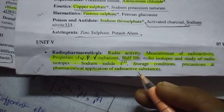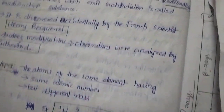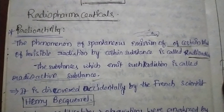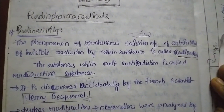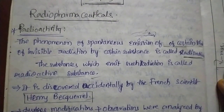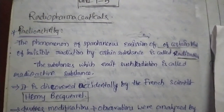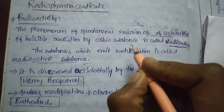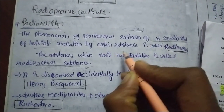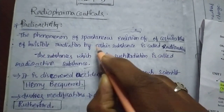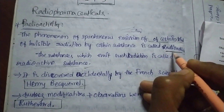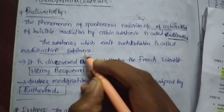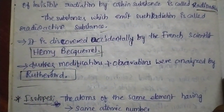Coming to the first topic: definition of radioactivity. What is meant by radioactivity? The phenomenon of the spontaneous emission of certain kinds of invisible radiation by certain substances is called radioactivity. Spontaneous means it emits the radiation at any time. The radiation is invisible — we cannot see this radiation with our naked eye. The substances which emit this radiation are known as radioactive substances.